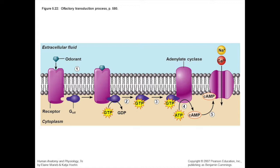Ultimately, an action potential is conducted to the first relay station in the olfactory bulb. Olfactory transduction begins when an odorant binds to a receptor, activating G-proteins, which activate enzymes that synthesize cyclic AMP as a second messenger. Cyclic AMP then acts directly on a plasma membrane cation channel, causing it to open, allowing sodium and calcium to enter. Sodium influx leads to depolarization and impulse transmission. Calcium influx causes the transduction process to adapt, decreasing its response to a sustained stimulus.